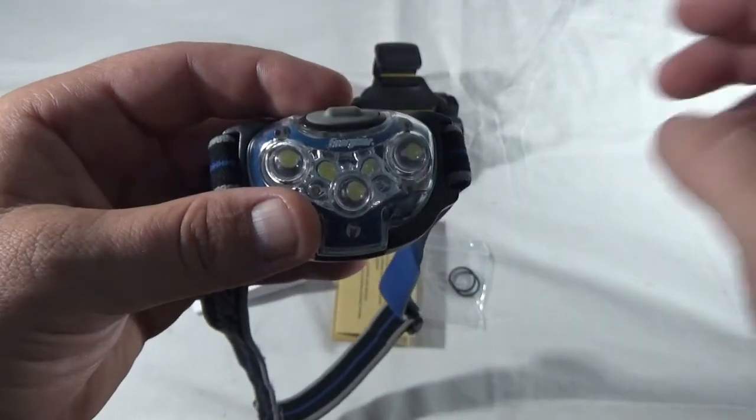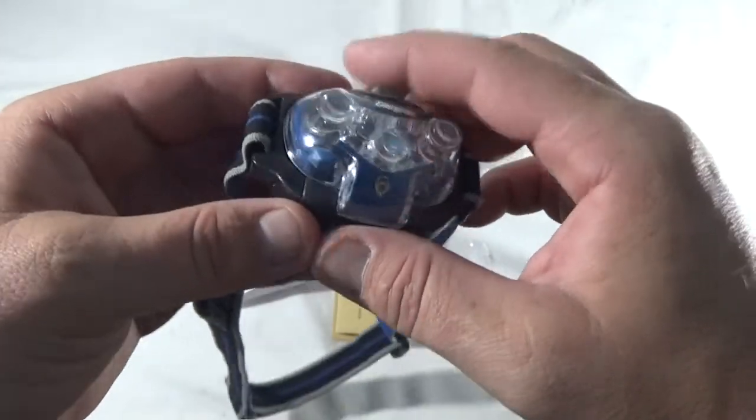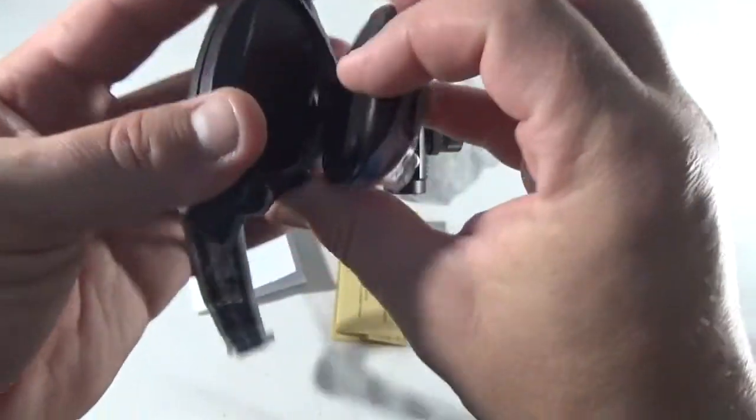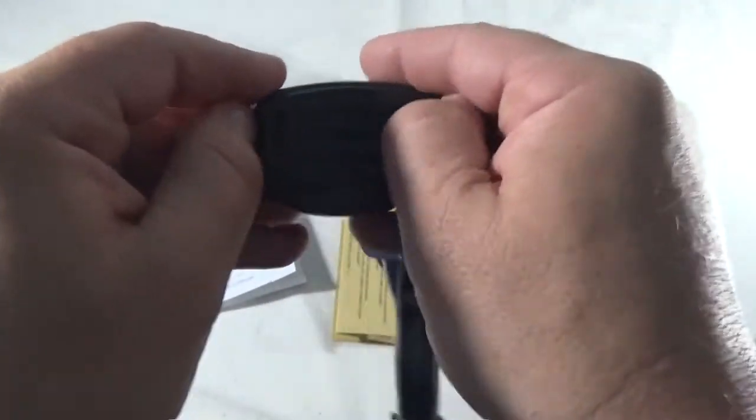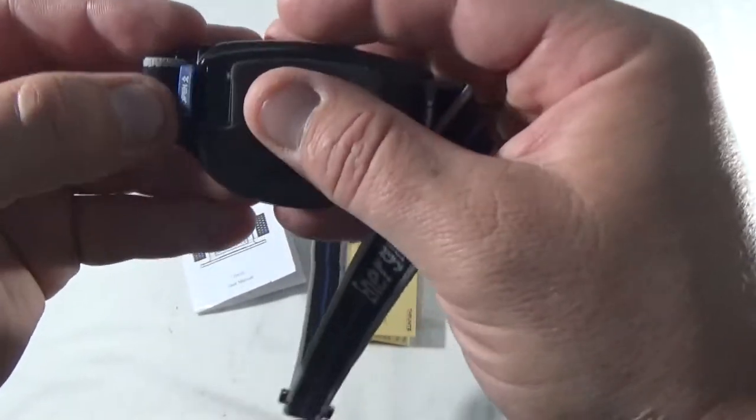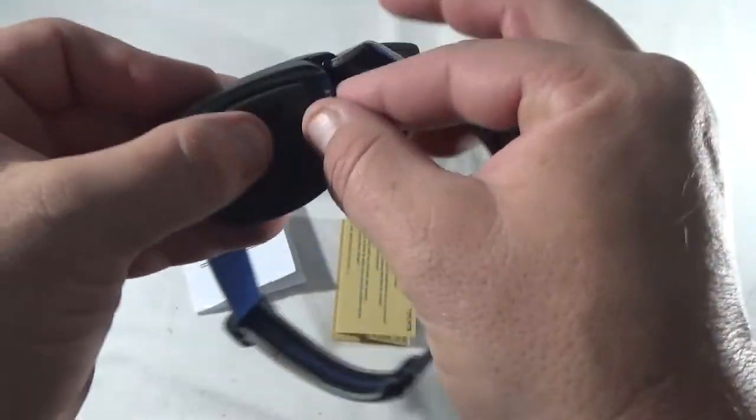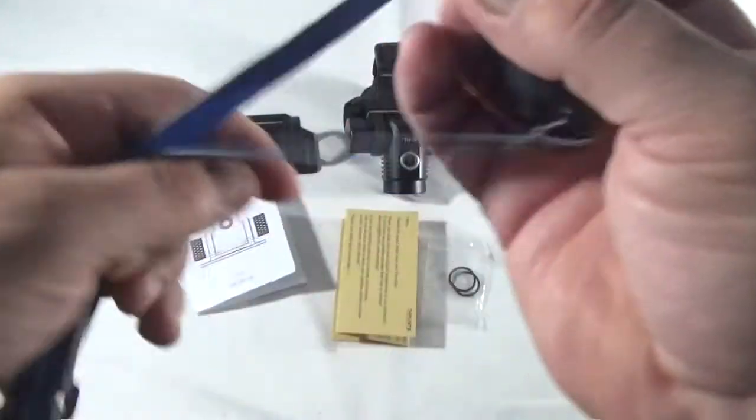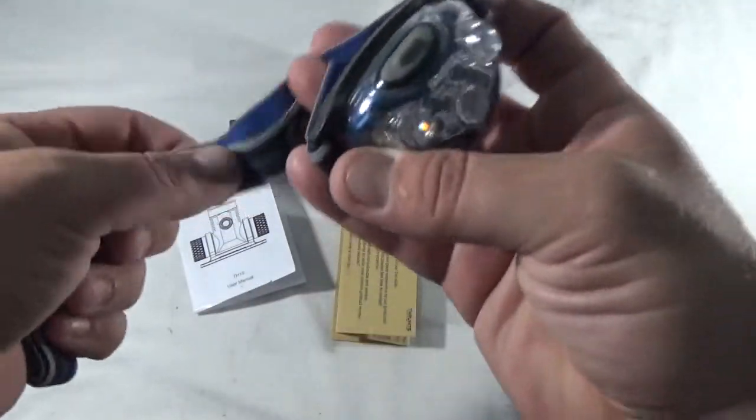This is my current headlamp. It's the Energizer Trailfinder, I think. And what I like about it is it takes three AAA batteries. I like to have AAA's, AA's, and all of my stuff because I can use my Eneloop rechargeable batteries for them.